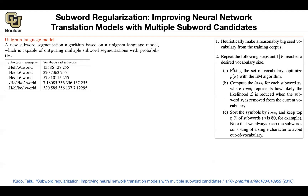Once you choose a vocabulary, you fix it and then optimize a probability over your sentences — that's where the language model comes in, since a language model puts a probability distribution on sentences. To remove subwords from your vocabulary, you look at each subword and compute how much likelihood you would lose if you removed it, giving you a measure of how important that subword is.